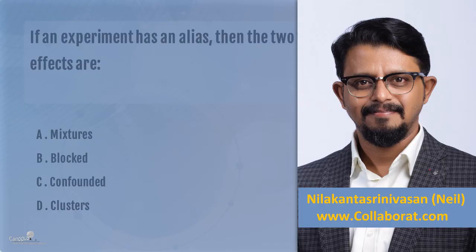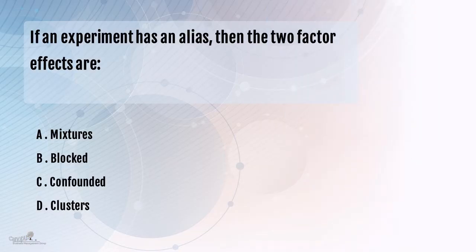So what do we mean by alias? If you have done design of experiments, you would know that the term alias structure or alias comes in design of experiments. When the estimate of an effect also includes the influence of one or more effects — usually higher order interactions — then the effects are said to be aliased, or in simple words, mixed up.